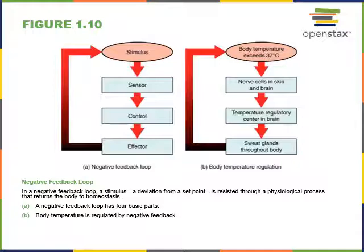Most homeostatic control mechanisms are negative feedback mechanisms, where the response of the effector counteracts the intensity of the original stimulus. The example shown here is the negative feedback mechanism to maintain body temperature. The homeostatic set point for body temperature is around 37 degrees Celsius. If our body temperature exceeds 37 degrees, nerve cell sensors in the skin and brain detect this and send a signal to a temperature regulatory control center in the brain, which sends commands to sweat glands to produce sweat and cool the body down, restoring the set point.